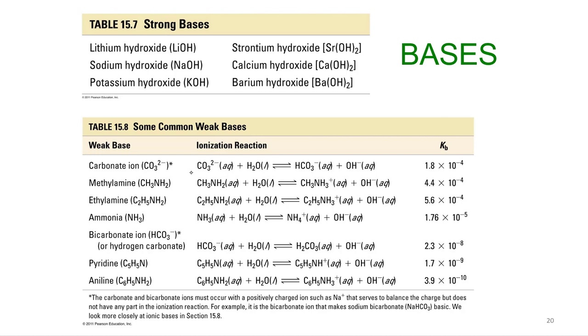Then you've got weak bases. We talked about the two general types: your nitrogen-containing molecules like ammonia, methyl amine, ethylamine, pyridine, aniline, and then the other very common source of weak bases are the conjugate bases of weak acids.